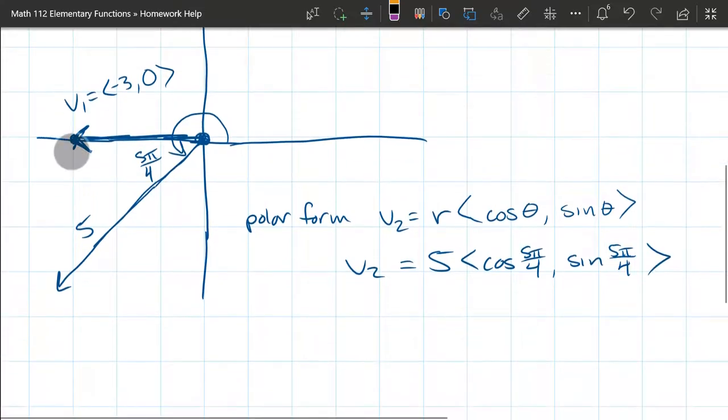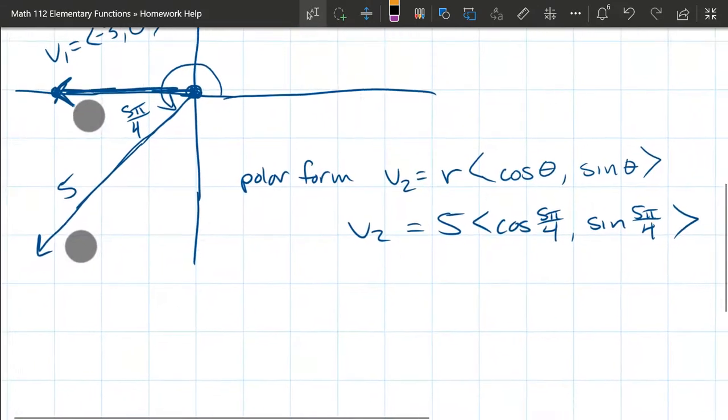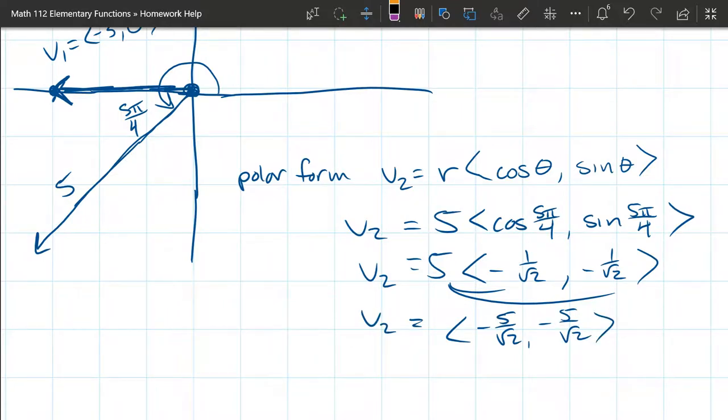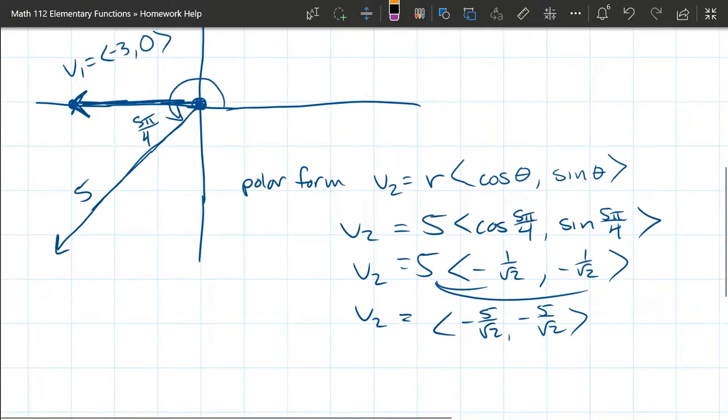So what are these numbers? Well, you're halfway between going to negative x and negative y, so they're both going to be negative, and when you're halfway between, that's one over square root two. So that's our vector two: 5 times <-1/√2, -1/√2>. We can distribute the five inside, so this is going to be <-5/√2, -5/√2>.